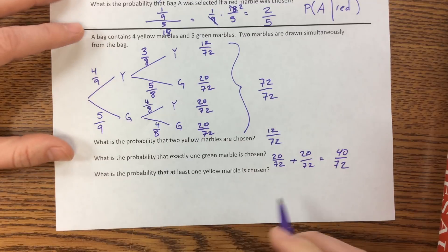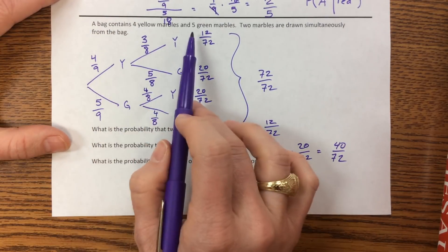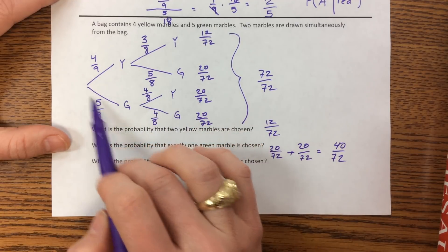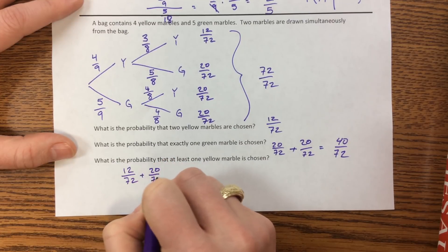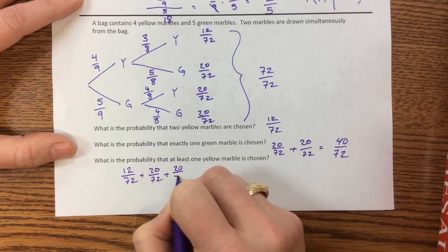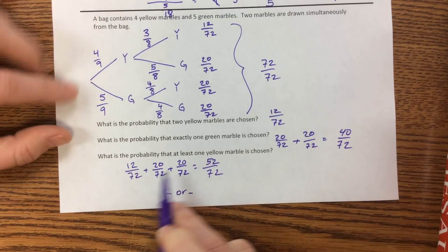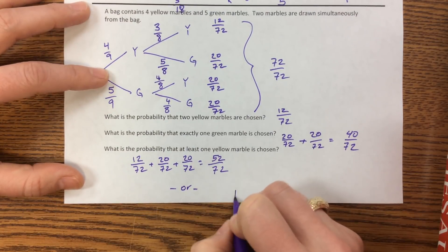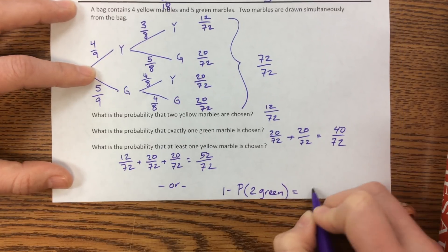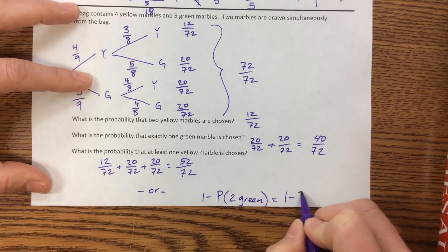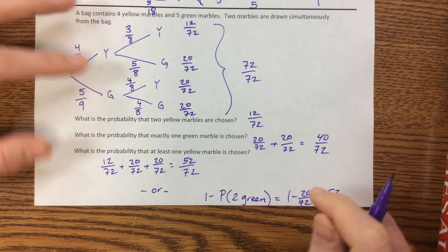What is the probability that at least one yellow marble is chosen? That includes two yellows, yellow-then-green, or green-then-yellow: 12/72 + 20/72 + 20/72 = 52 out of 72. Alternatively, at least one yellow equals one minus the probability of two greens. The probability of two greens is 20 out of 72, and 72 minus 20 gives 52 over 72.